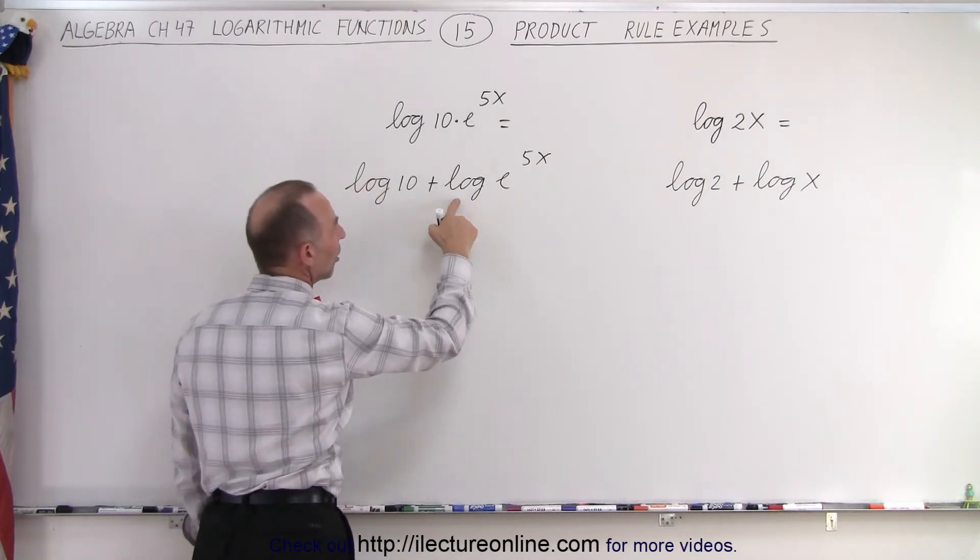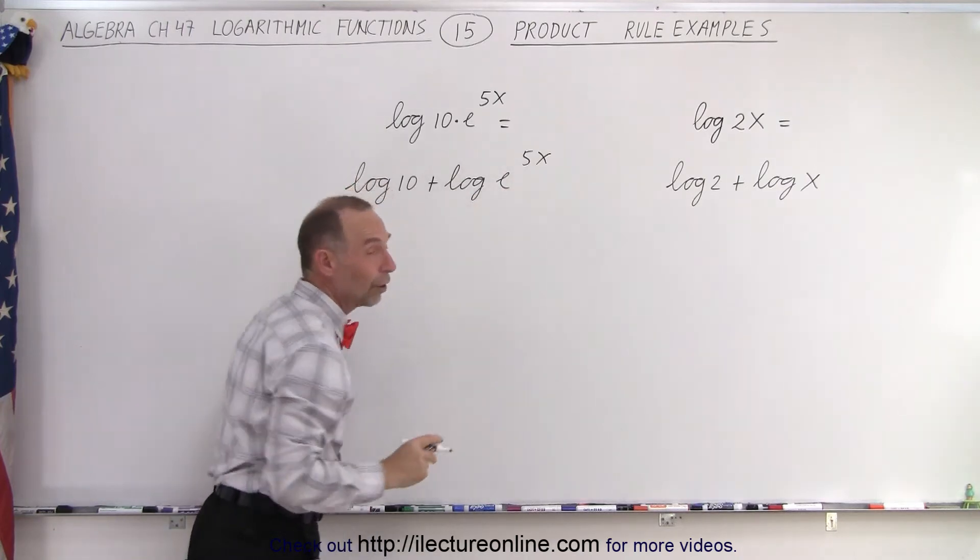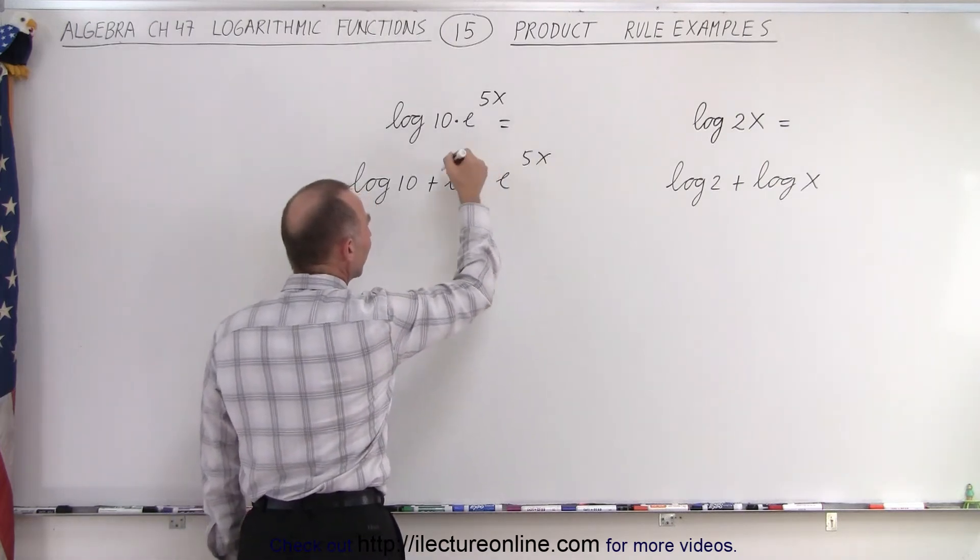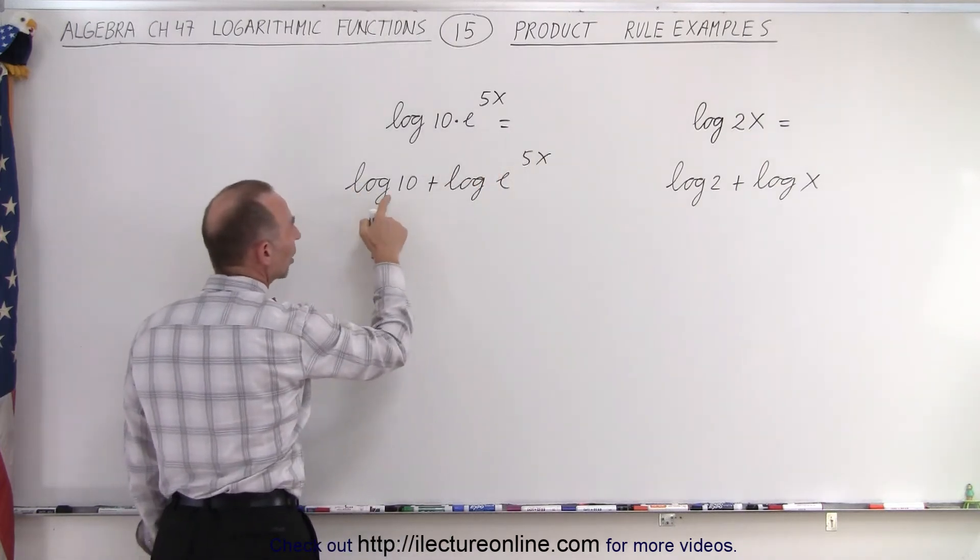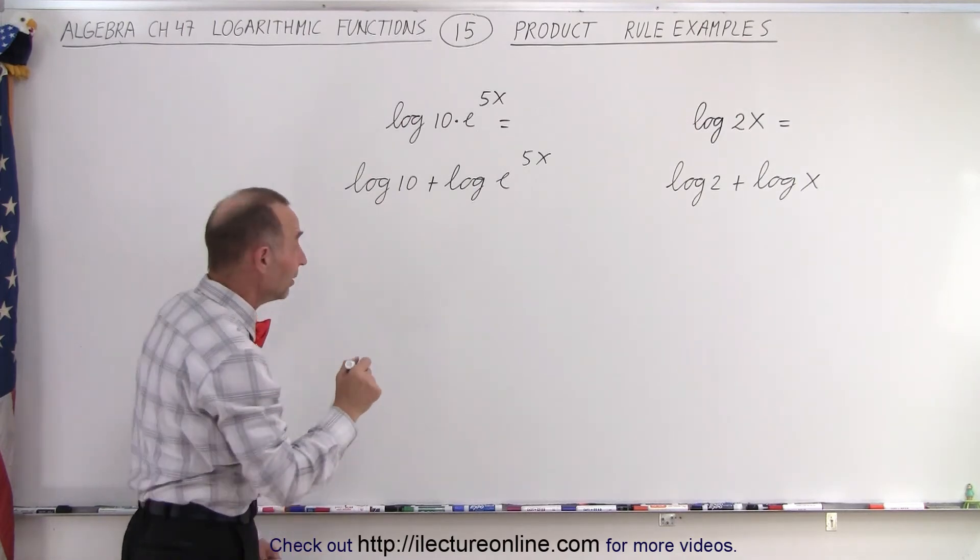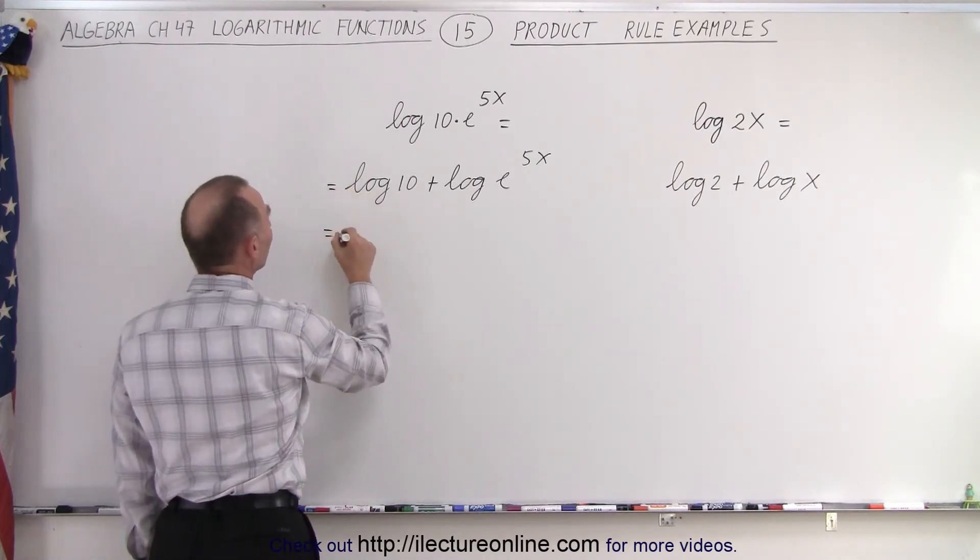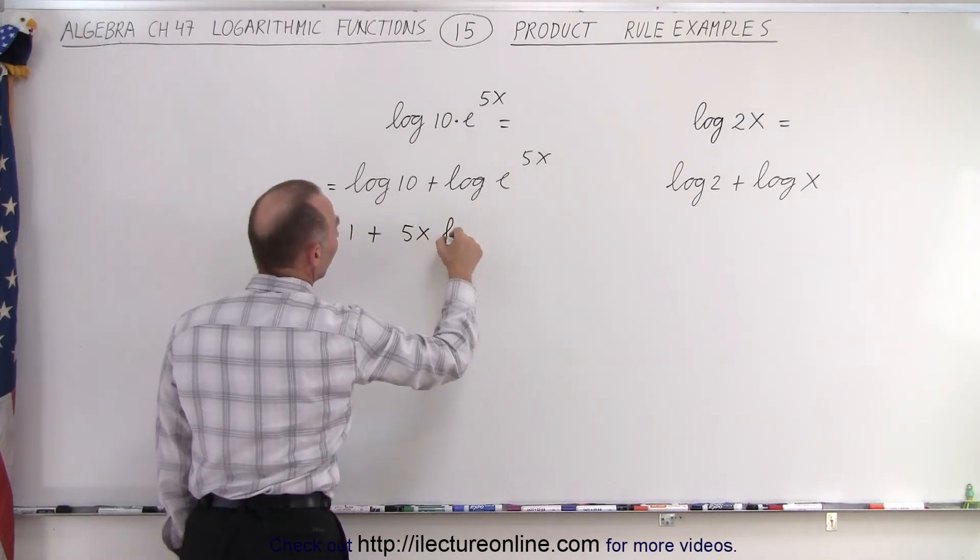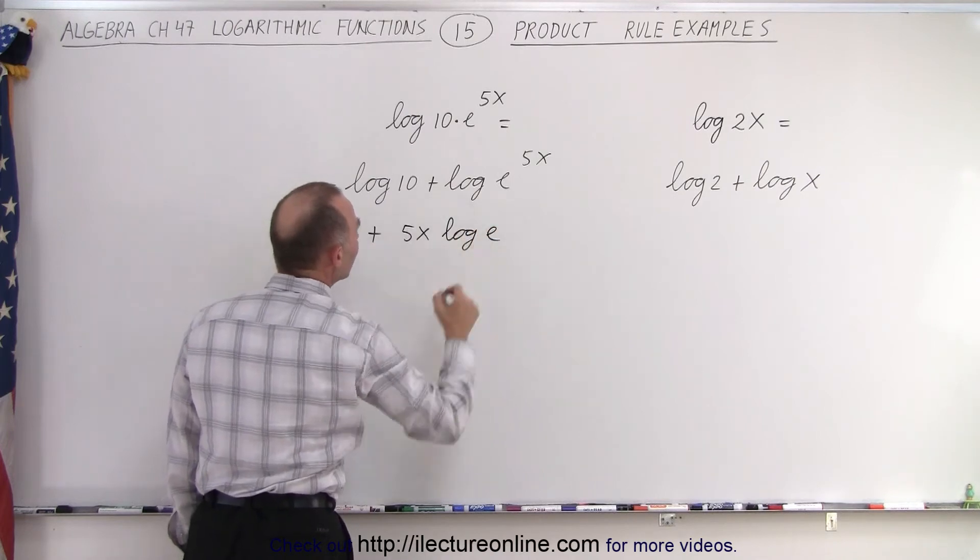Now notice that here's the log of e to an exponent. Remember the power rule? The power rule says that we can take the 5x and write it in front. And the log of 10, remember log base 10 of 10 is equal to 1. So this can be written as 1 plus 5x times the log of e.